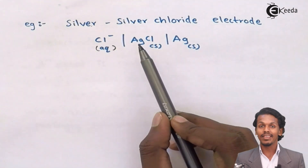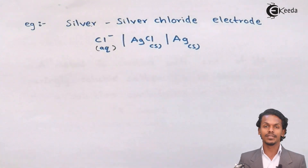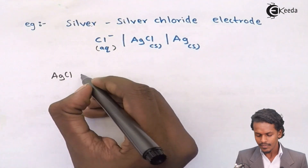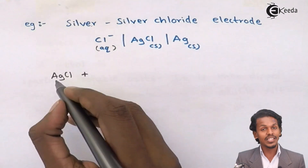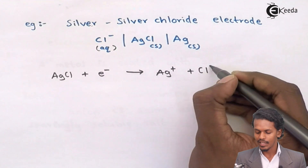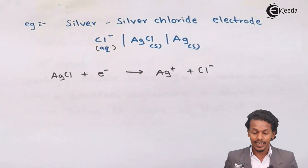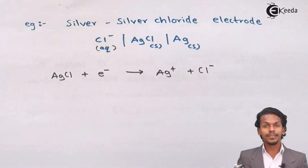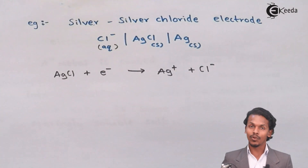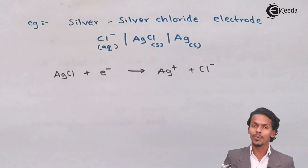The Cl⁻ ions are sparingly insoluble with AgCl. The half-cell reaction for a reduction process is: AgCl(s) + e⁻ → Ag + Cl⁻. This silver-silver chloride electrode plays a very vital role in the determination of the EMF of the cell.